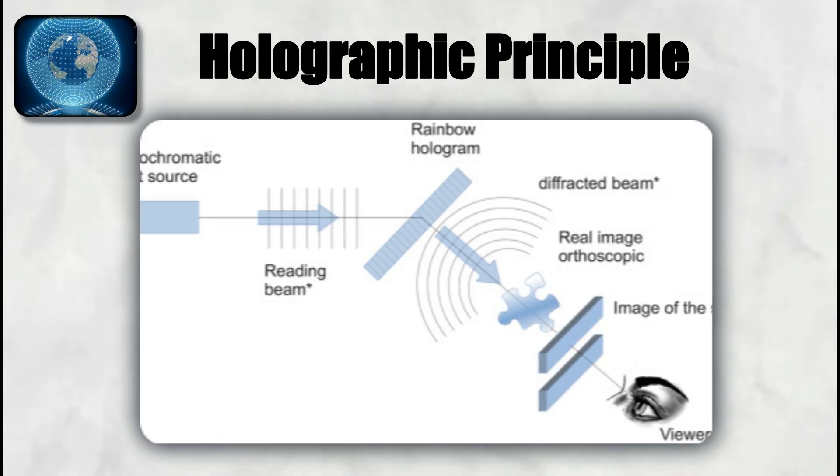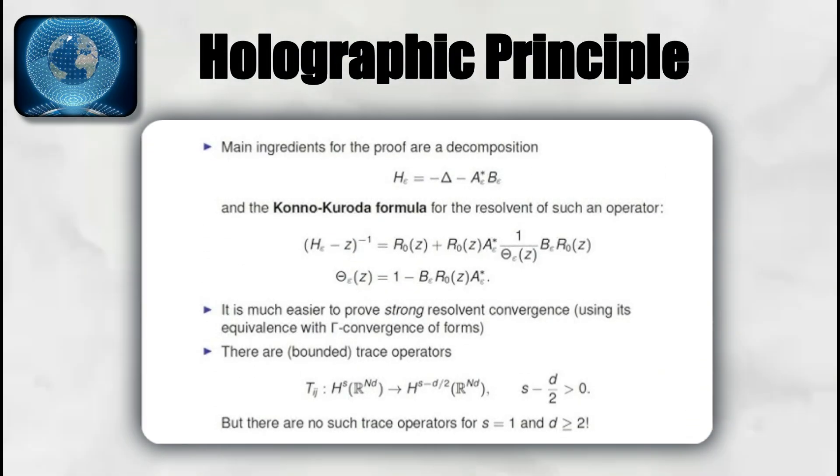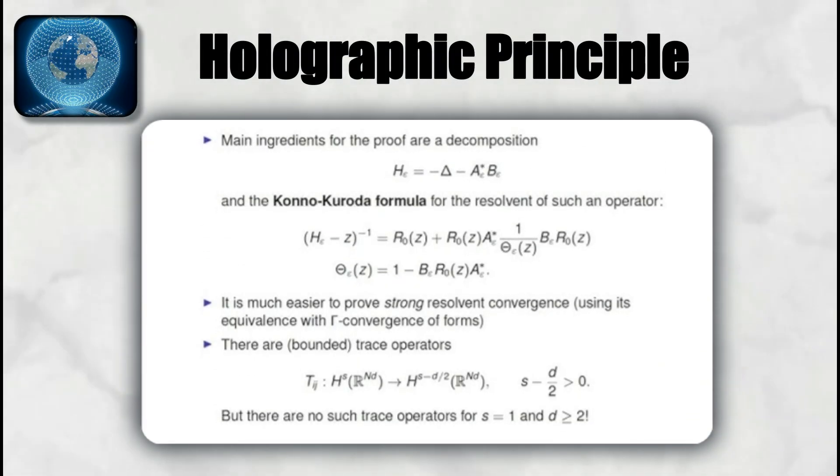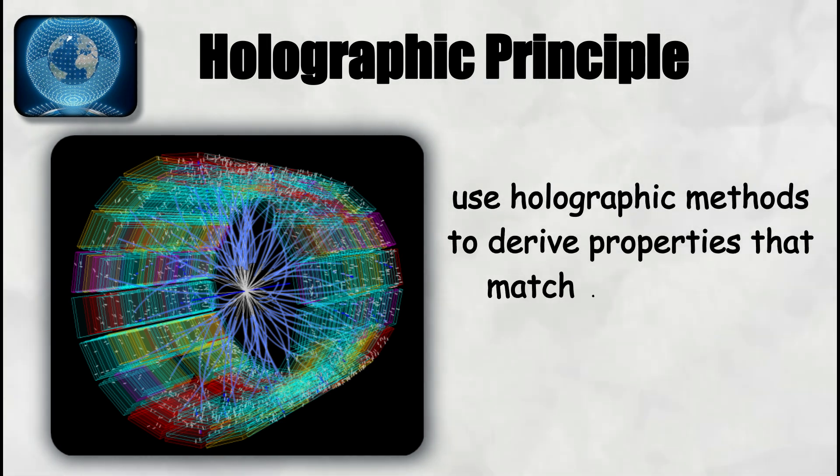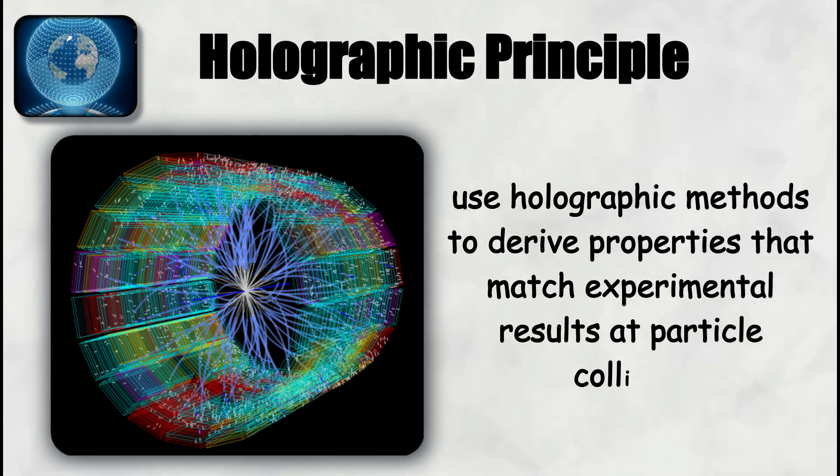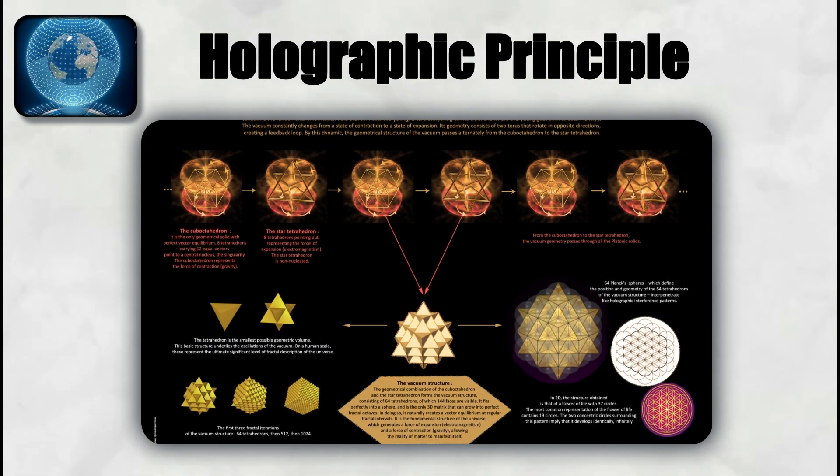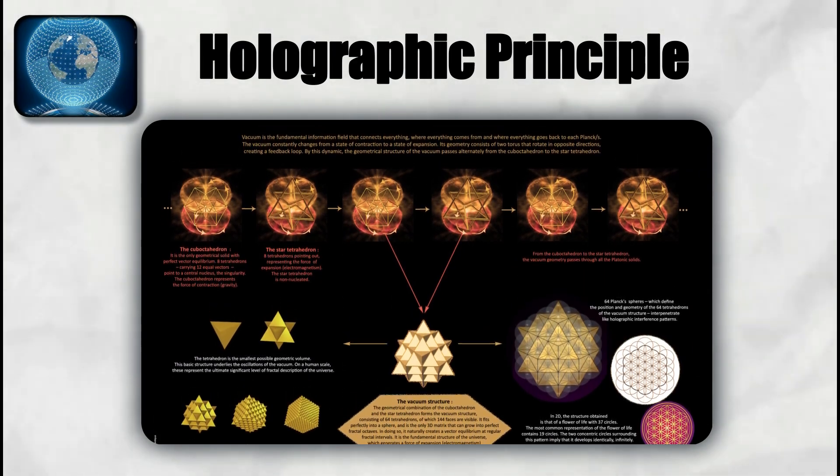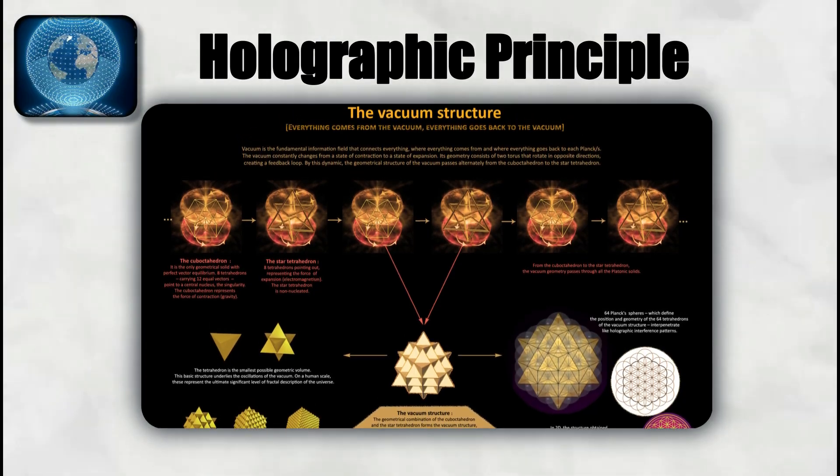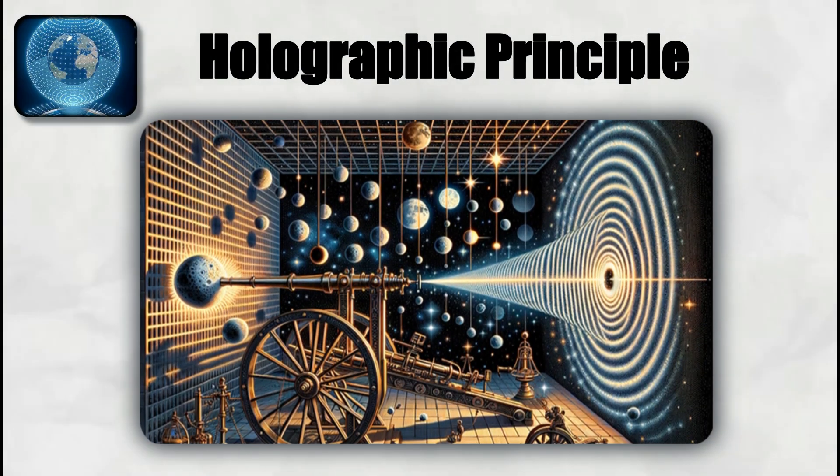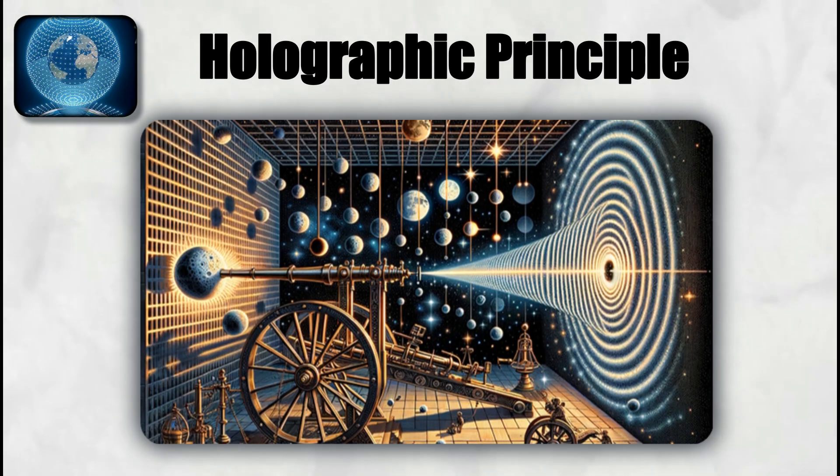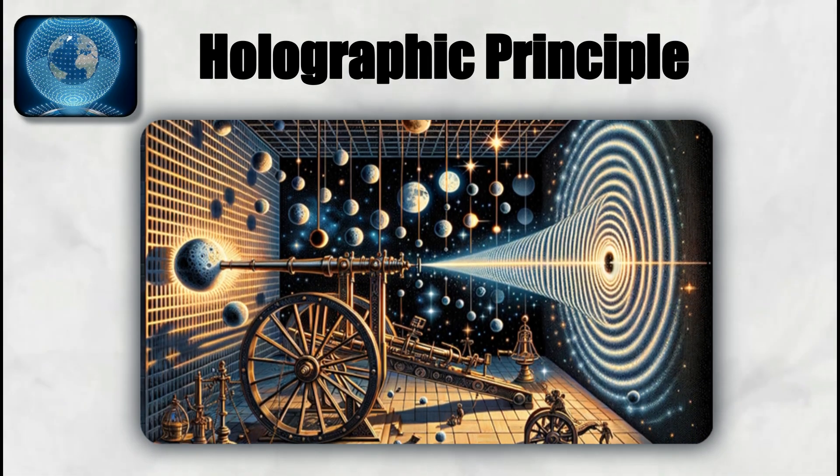Tests of the holographic principle are indirect. Some calculations of strongly interacting quantum systems, such as quark gluon plasma, use holographic methods to derive properties that match experimental results at particle colliders. Cosmologists also explore whether holographic models can explain the large-scale structure of the universe. Direct verification remains out of reach, but the principle has become a guiding framework in theoretical physics for unifying quantum mechanics and gravity.